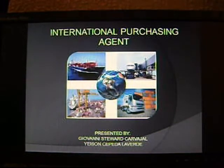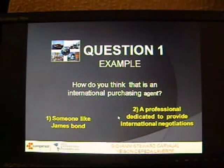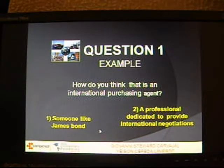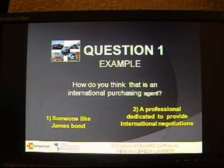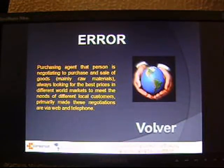This project consists of clicking on the image to start answering questions about purchasing agencies. There are in total ten questions with two options of response — one is false and the other is correct. When you answer, the presentation shows the answer with an explanation about it.